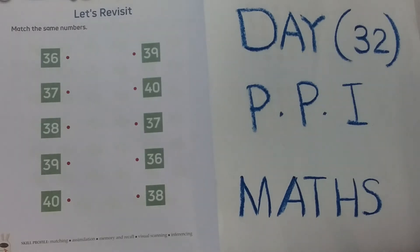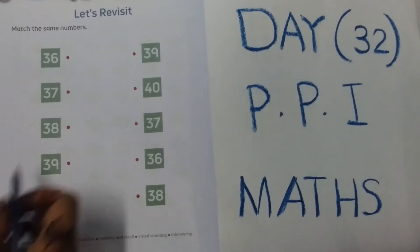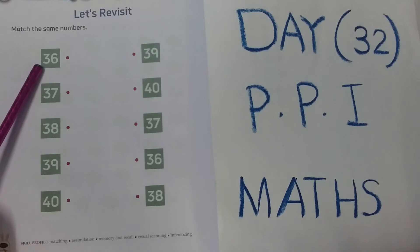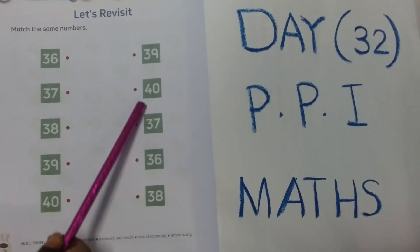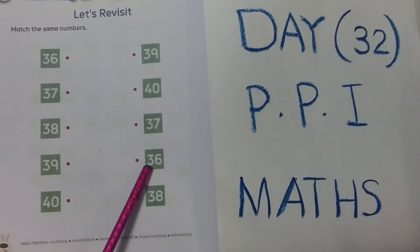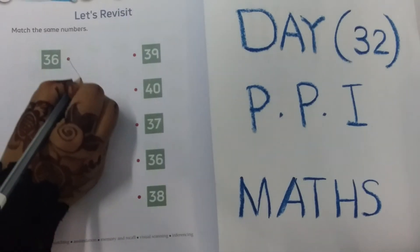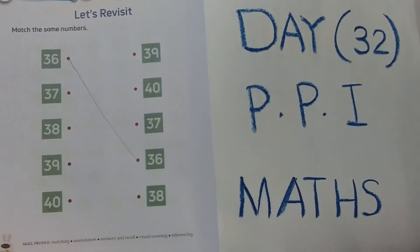Now see, match the same numbers. 36. 3, 6, 36. Where is another 36? Where is the similar number? Yeah, 3, 6, 36. So match it with the same numbers. 36 with 36.